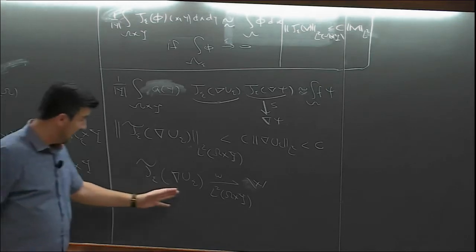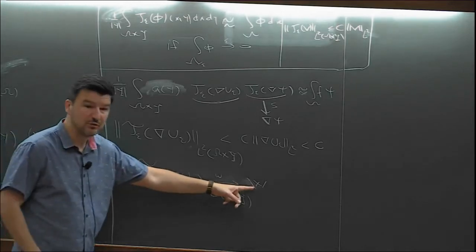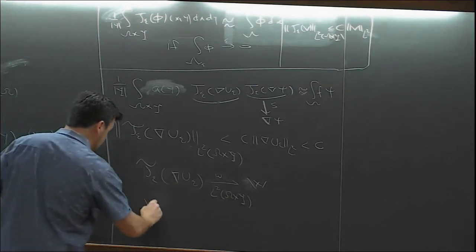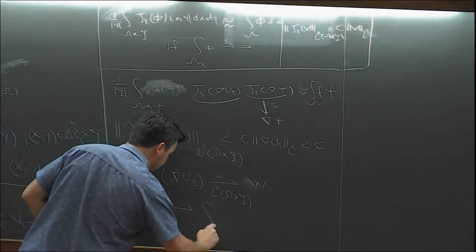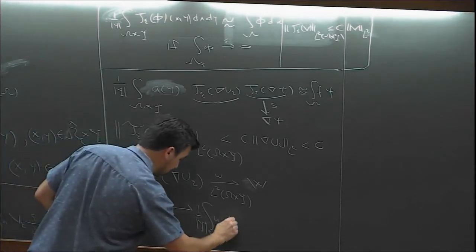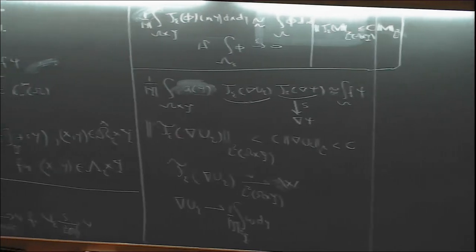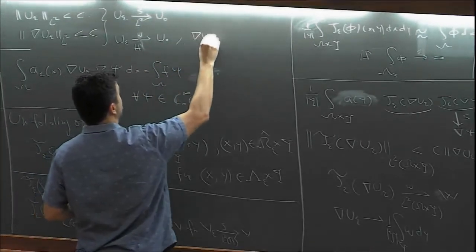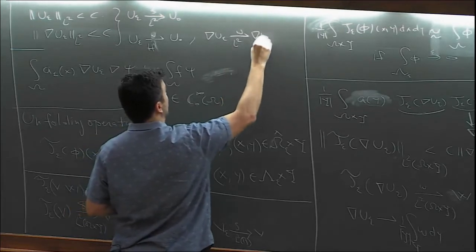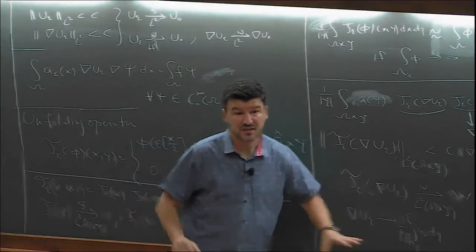What can we say about w? We know that if the unfolding weakly converges to w, then the sequence u_ε weakly converges to the average of w. We know u_ε is strongly convergent in L² and weakly convergent in H¹, so the gradients are weakly convergent in L² to the gradient of u₀. So the best we can say right now about T_ε(∇u_ε) is that it has a weak limit.